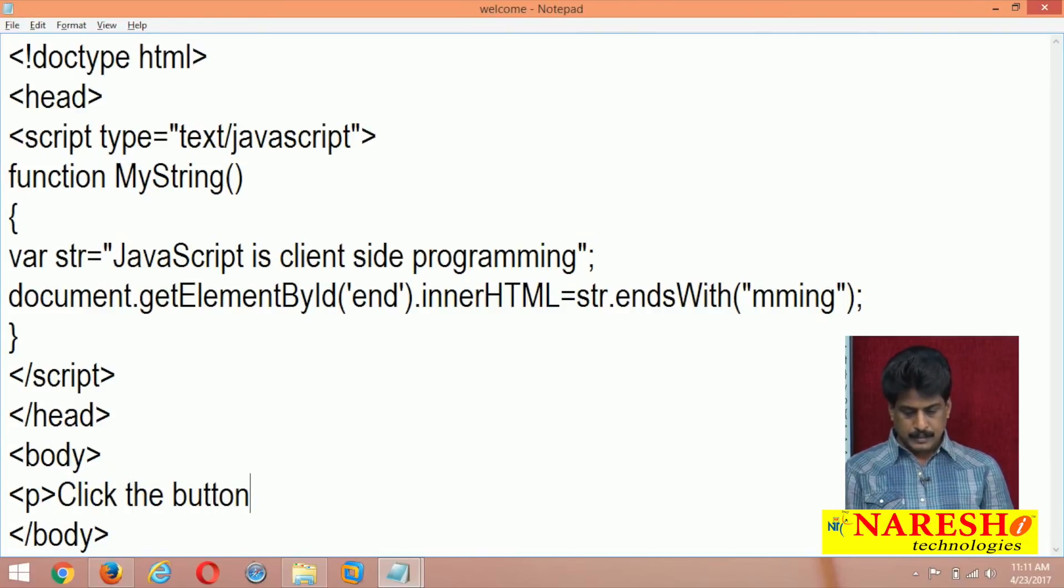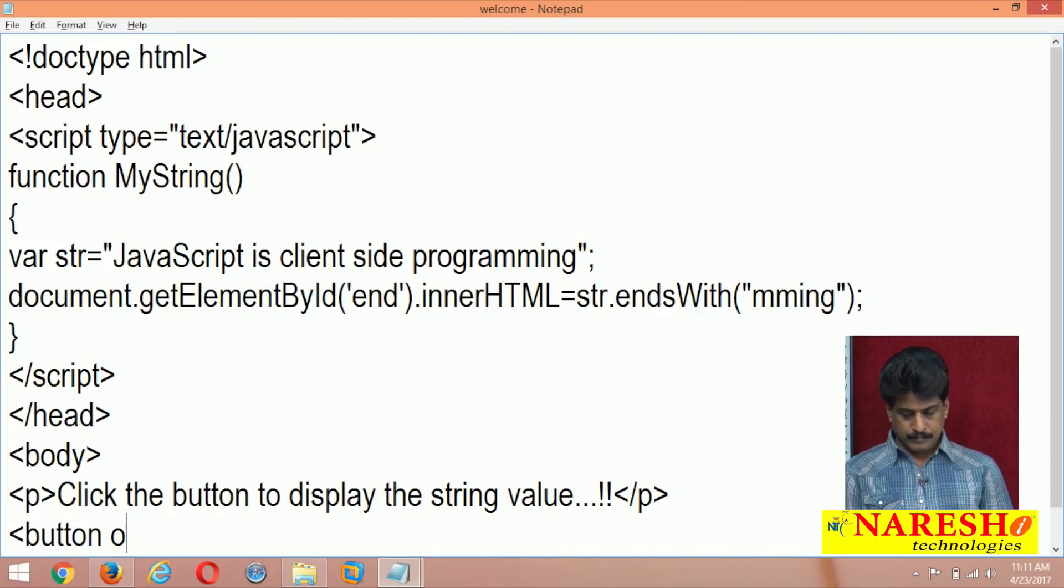String dot endsWith. So write body level paragraph. Click the button to display the string value button. onclick is equal to myString, click underscore value.